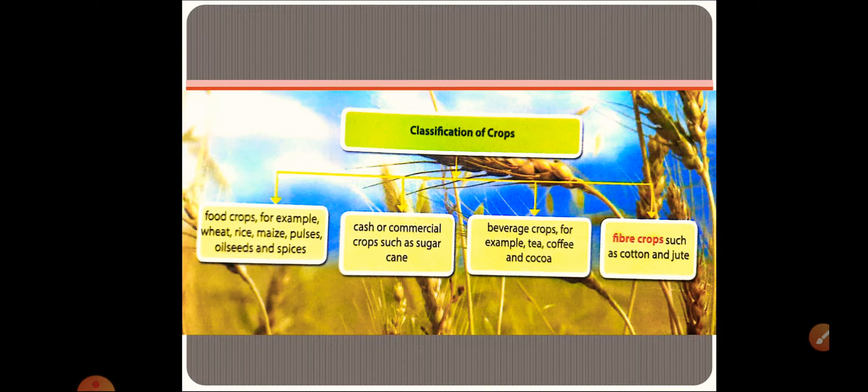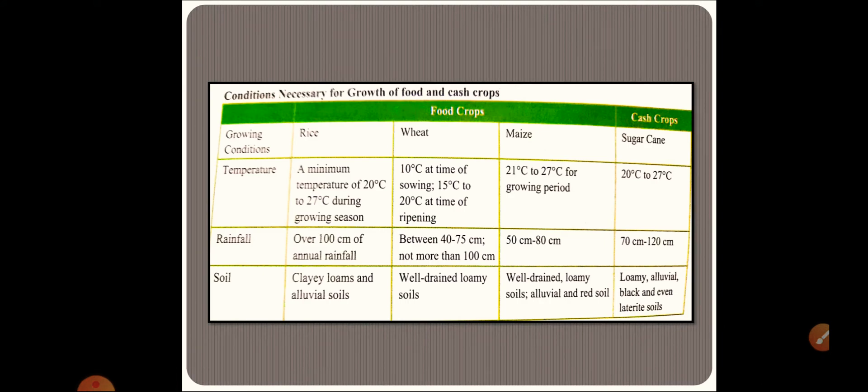Let us start from the food crop first. This type of table you can see in your book as well. For the food crops, firstly please remember, we have three parameters to see for a particular crop. So only three you need to write: temperature, rainfall, and soil. That is it.